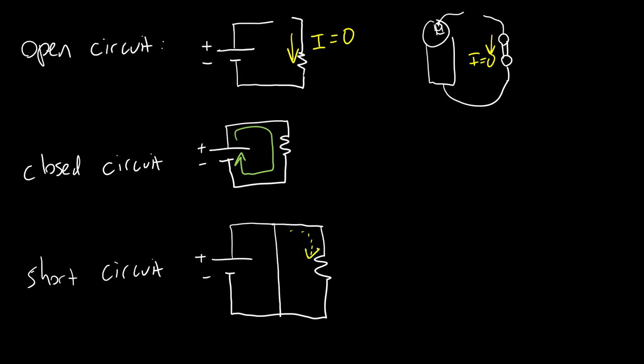So rather than having any current flow through the resistor, this current is going to be zero, and you are going to get extremely high or near infinite current flowing through that short circuit.